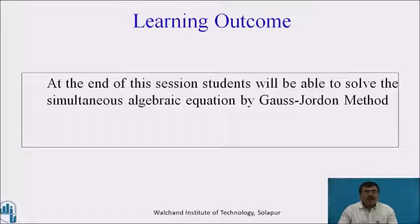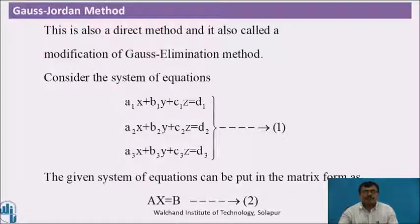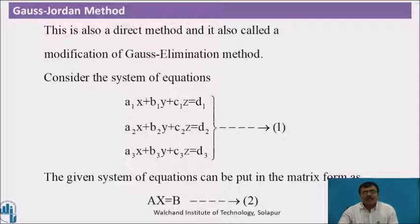Learning Outcome. At the end of this session, the student will be able to solve the simultaneous algebraic equation by the Gauss-Jordan method. This is also a direct method and it is also called the modification of the Gauss-Jordan method.